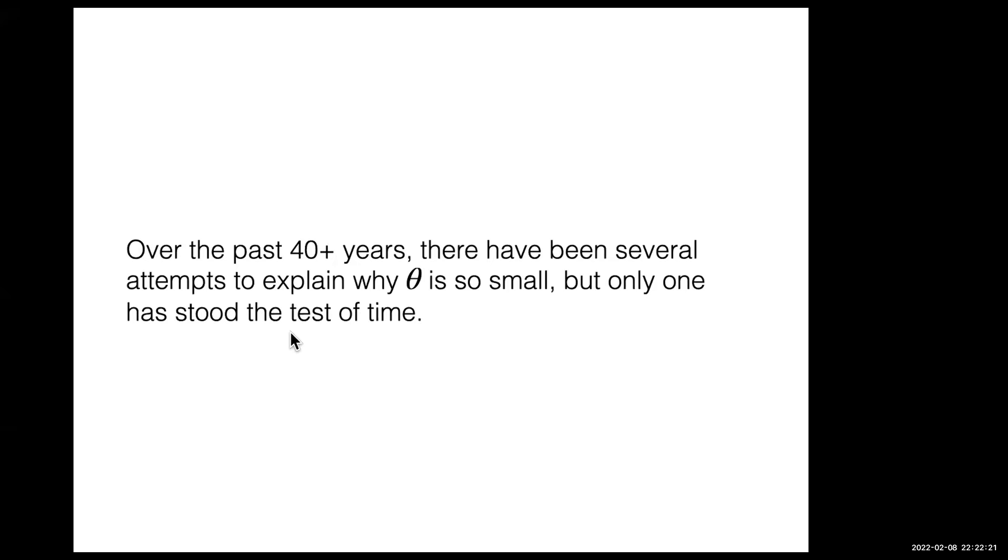The experimental limits on the neutron electric dipole moment have been improved over the years. It's been a major enterprise of experimental physics to try to measure this. So far, all results are negative. Interpreted in terms of the theta parameter, they limit its possible values to less than one part in 10 billion. Why? Now we have a numerical coincidence that's very impressive quantitatively.